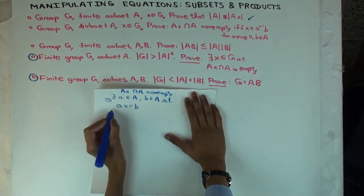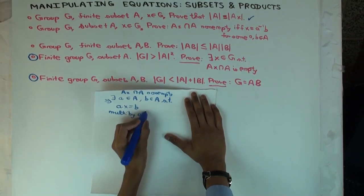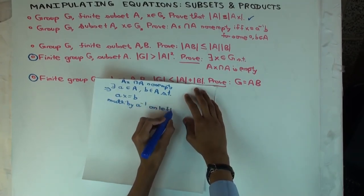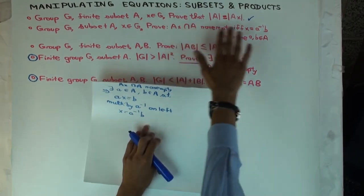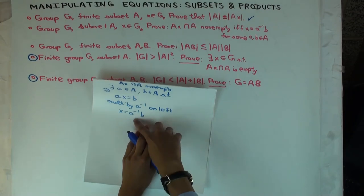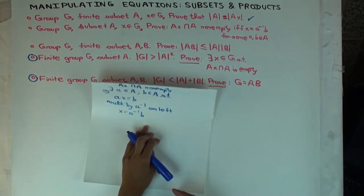Multiply by A inverse on both sides on the left. That's like transposing the A to the other side, or trying to isolate for X. So you get X equals to A inverse B. Are we done? Well, we've shown this implies this. What about the other direction? Suppose X can be written in the form A inverse B. Can you conclude that AX intersect A is non-empty? Yes. How do you do it?